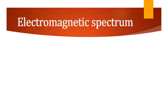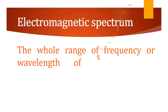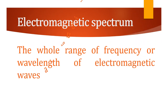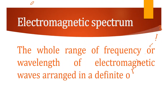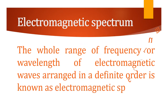What is electromagnetic spectrum? Basically, the whole range of frequency or wavelength of electromagnetic waves arranged in a definite order is known as electromagnetic spectrum. That is, the full range of electromagnetic waves arranged according to their frequency or wavelength will be known as electromagnetic spectrum.